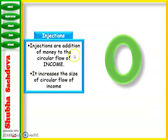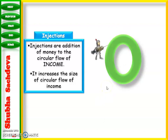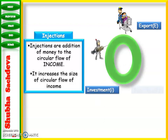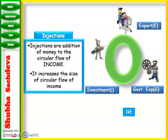What is the injection? Injection means the addition of money to the circular flow of income, which increases the size of our circular flow. The acronym IGE stands for Investment, Government expenditure, and Exports — these are injections into the economy.